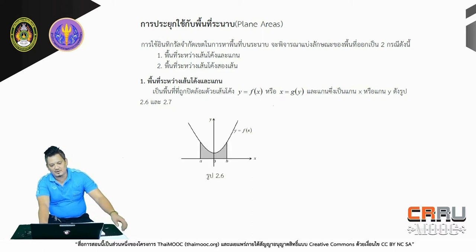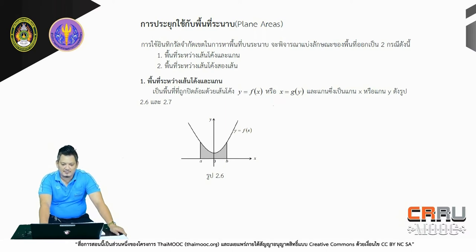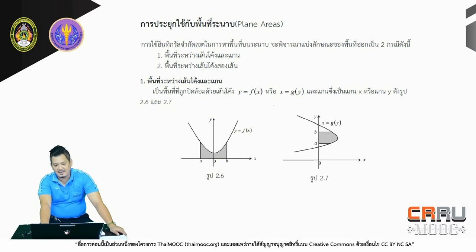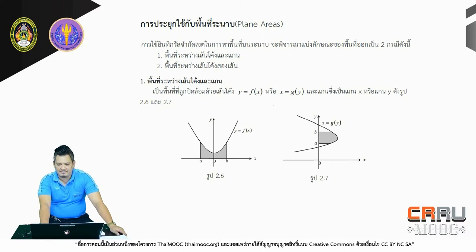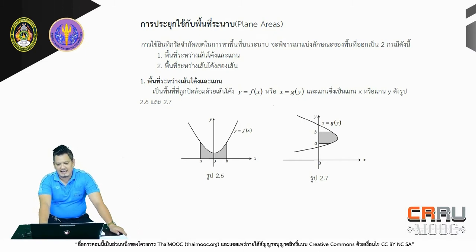We can see that 2.6 means F(X) or G(X), which is the function of X. The 2.7 is X to G(Y). You will see the X to the G(Y).